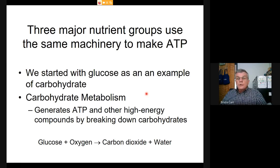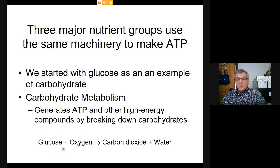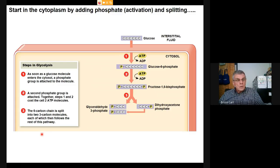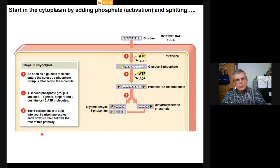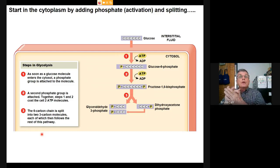Starting with glucose as an example: carbohydrate does have quite a bit of energy, and when burned in the body it releases CO₂ and water. Carbohydrate metabolism is the basis for ATP production, but it's also important to realize this can be replaced by other carbon fragments—amino acids, fatty acids, and acetyl groups are shoved into this system whenever we need ATP.